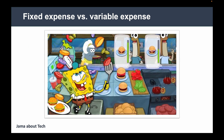To illustrate fixed and variable expenses, consider the Spongebob example. Products used to prepare a burger — onion, cheese, beef, buns — are variable expenses: recurring items you need to keep buying continually. But the stove, kitchen top, spatula, and beverage machines visible in the picture are fixed expenses — you invest in them at the beginning and they continue to serve you for years to come if properly maintained.